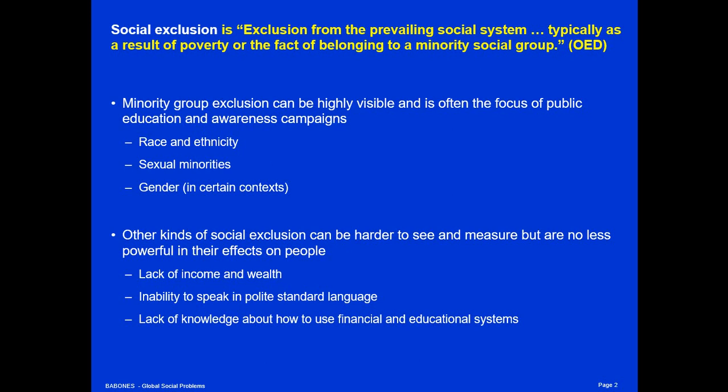But other kinds of social exclusion can be harder to see and measure, but are no less powerful in their effects on people. For example, lack of income and wealth — often you can't see it, but it has a massive impact on people's ability to integrate in society. The inability to speak in polite, standard language is not easy to measure on a census form, but when you meet somebody who doesn't speak the language in a standard, polite way, you immediately notice, and you're much more likely to exclude that person from friendship, from job opportunities, as a tenant.